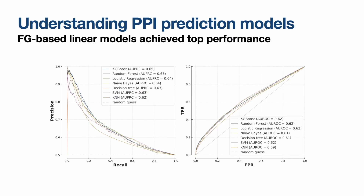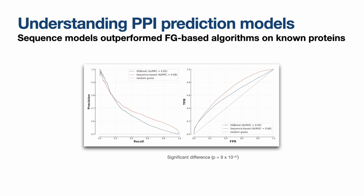Focusing on the functional genomics-based models first, it was interesting to note that they all perform roughly the same — using something sophisticated like XGBoost performs about the same as logistic regression, which was really interesting. And if we add the sequence model, we can see it seems to perform better, except at very low recall. But as we'll see in the next couple of minutes, this comes with a few pitfalls.